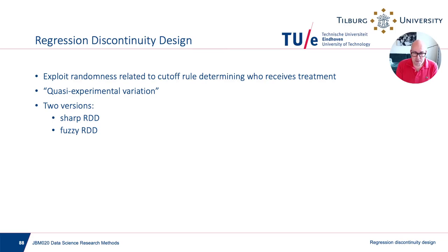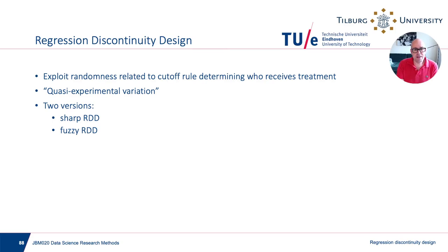You have a cutoff rule and there is some randomness. That randomness essentially determines whether you're just below or just above the cutoff with some variable that in the end determines treatment. That variation we can think of as random, and if this is the case we can exploit it to estimate treatment effects — what people sometimes call quasi-experimental variation. There are two versions: the sharp regression discontinuity design and the fuzzy regression discontinuity design. I'll start with the sharp.